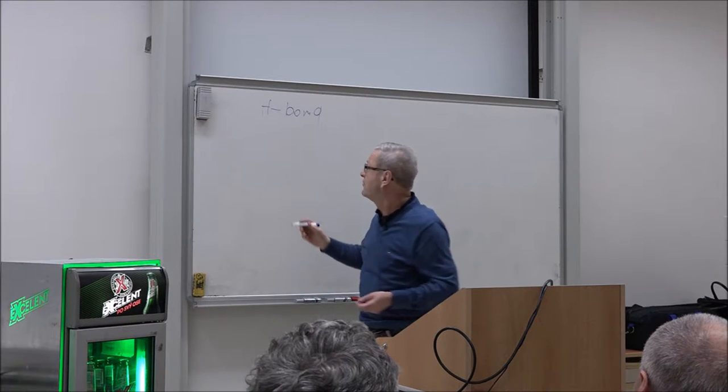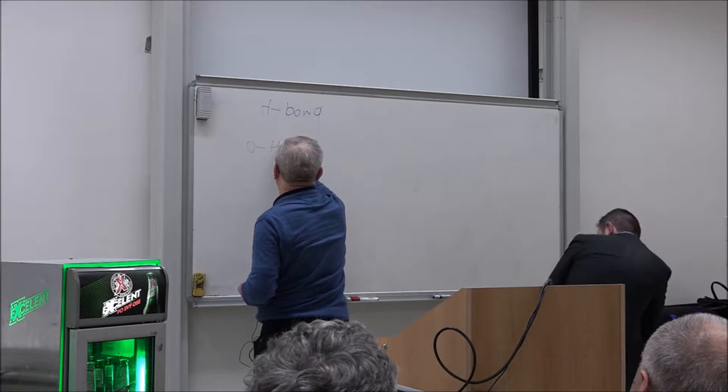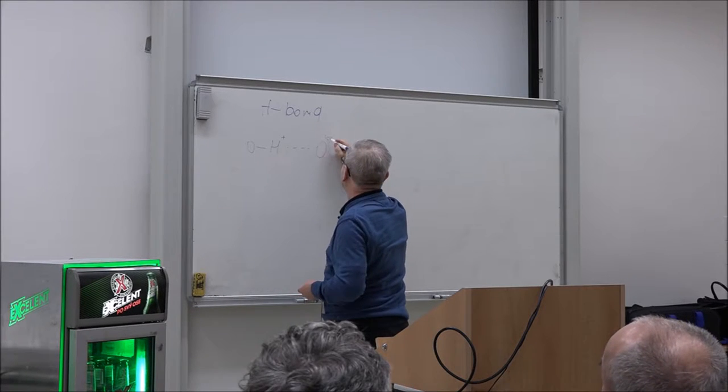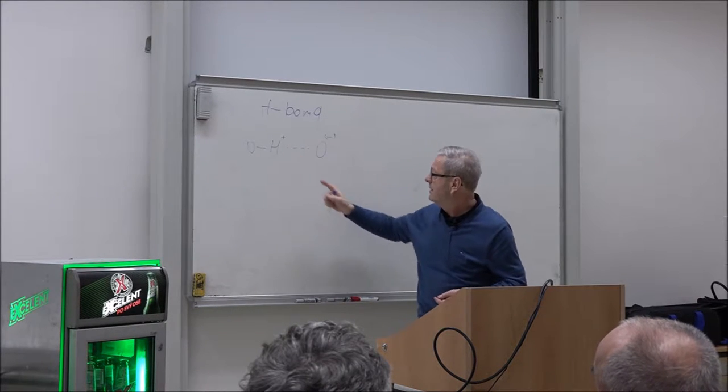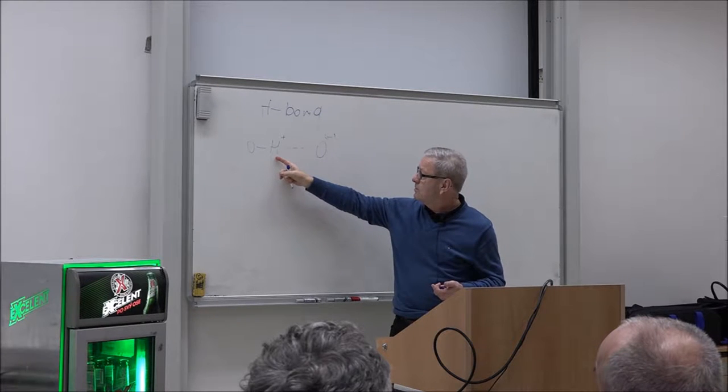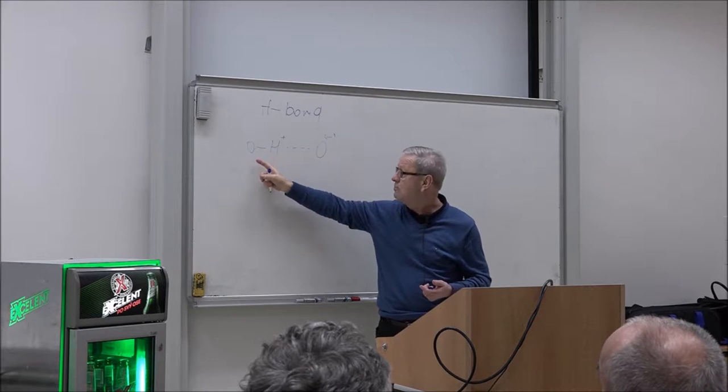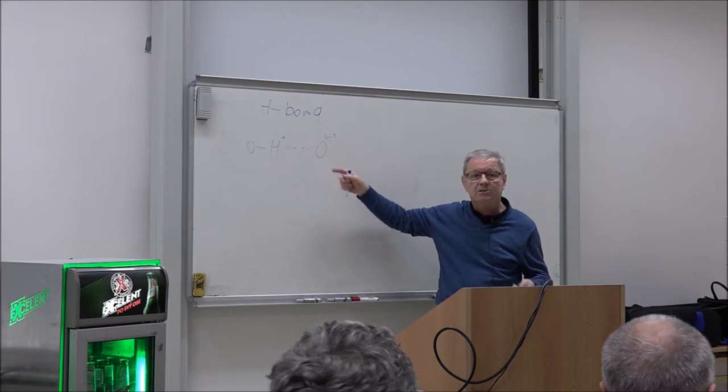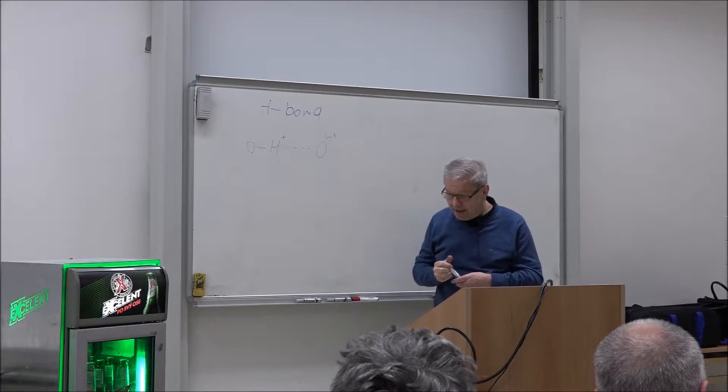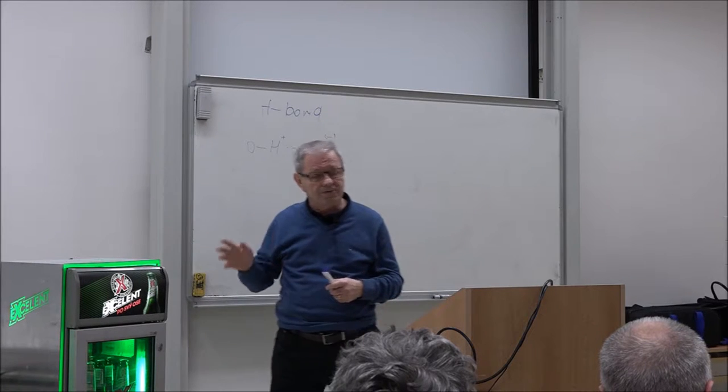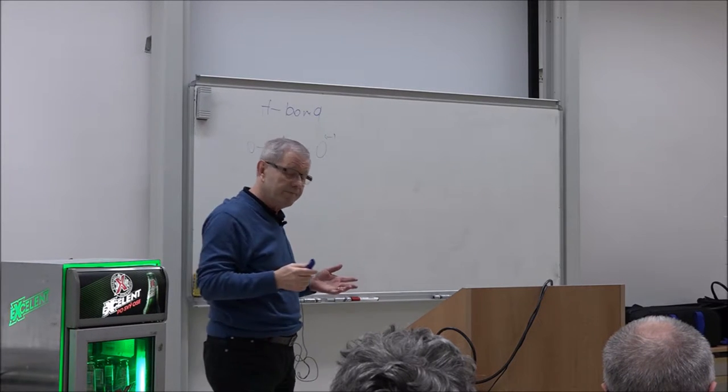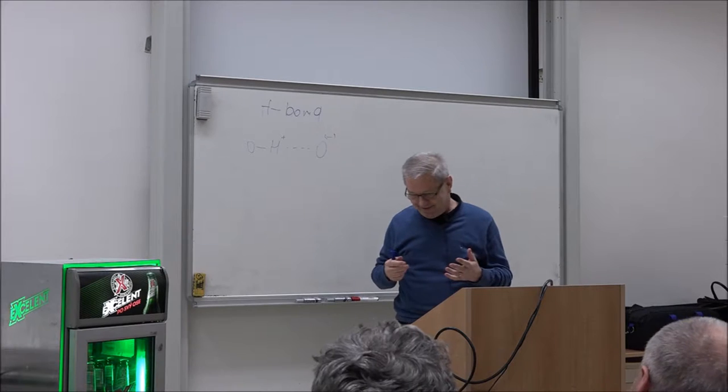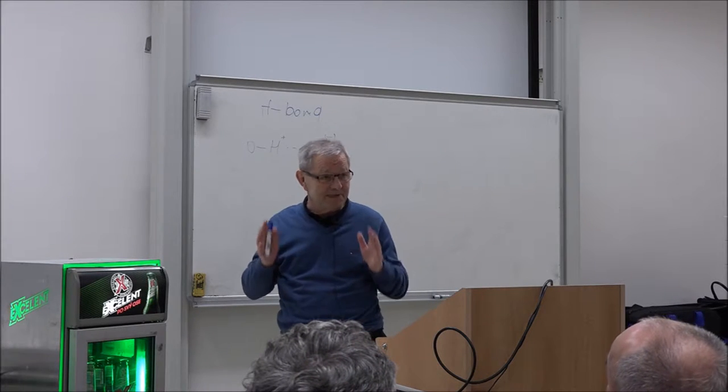What is the hydrogen bond? You remember from the freshman courses that this is the bond between electron-deficient proton with the place with surplus of electron. For example, like this one. The electron-deficient proton is created when it is covalently bound to the electronegative element, like oxygen here. And this could be, for example, lone electron pairs or pi electrons there. The hydrogen bond is known for a long time, almost for 100 years. It is very important.